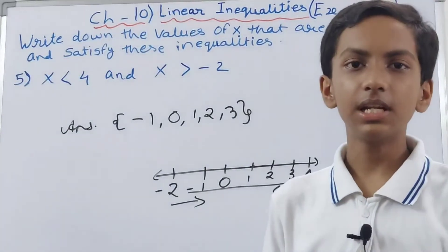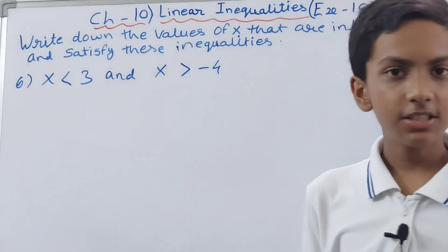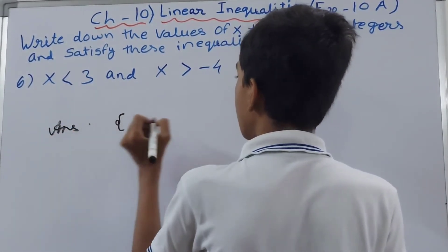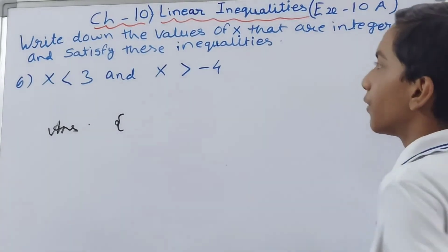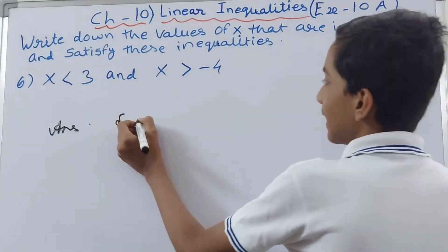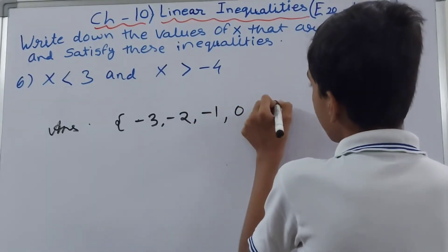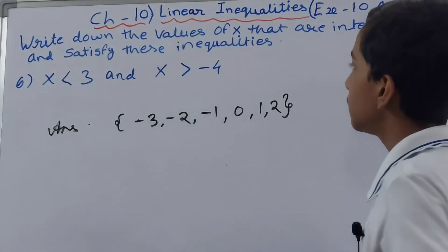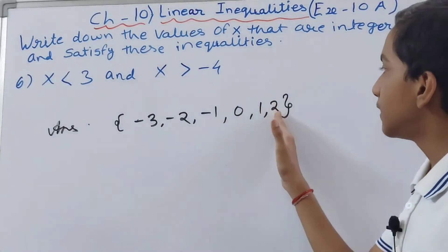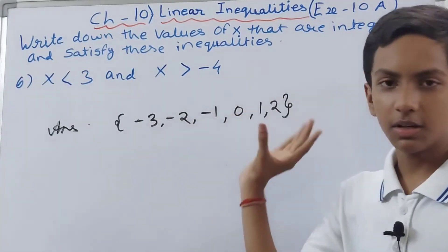The final part: x is less than 3 and x is greater than minus 4. We open the set. X is greater than minus 4, so we start writing numbers greater than minus 4: -3, -2, -1, 0, 1, 2, and then close it. We stop at 2 because x has to be less than 3. The answer is {-3, -2, -1, 0, 1, 2}.